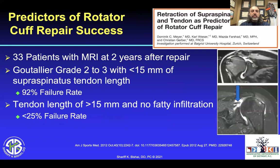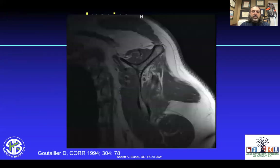Is there a way we can predict whether our rotator cuff will heal? In this article by Christian Gerber's group, 33 patients underwent MRI at two years. They found that patients with Goutallier grade 2 and 3 with a tendon length of less than 15 millimeters did poorly — upwards of a 92% failure rate. But if there's a tendon length greater than 15 millimeters and no fatty infiltration, there's only a less than 25% failure rate.